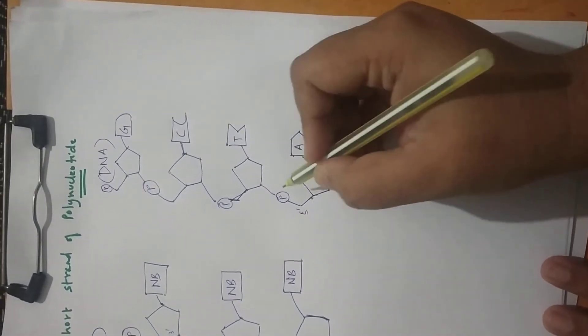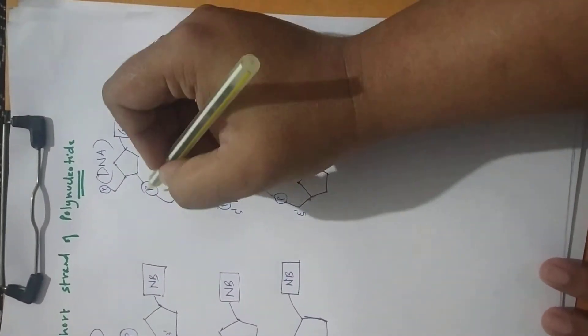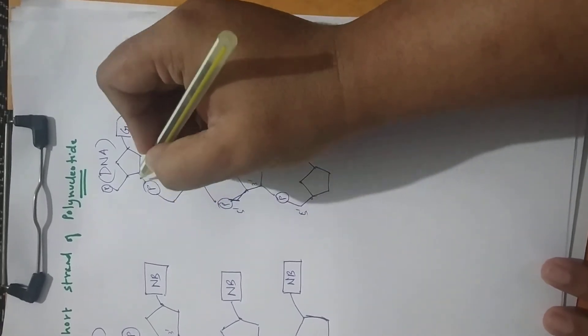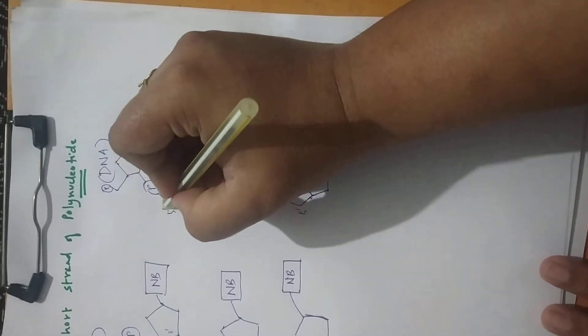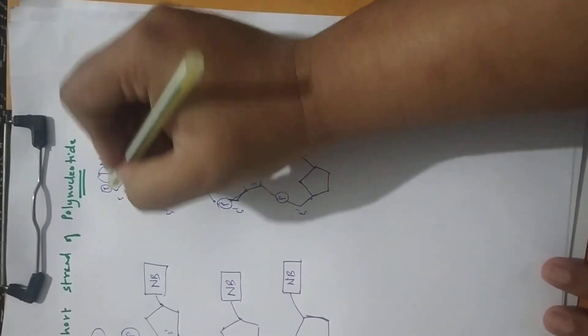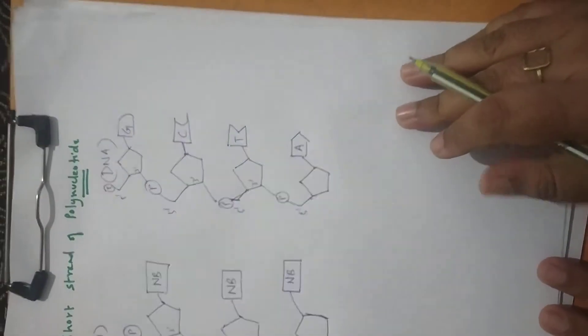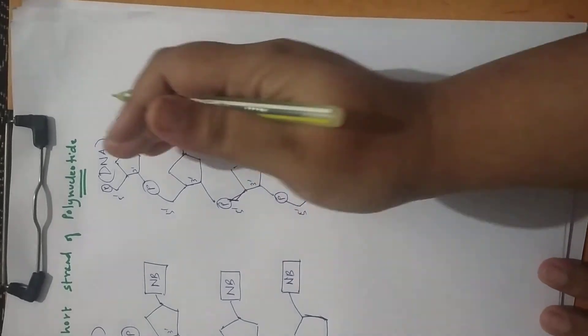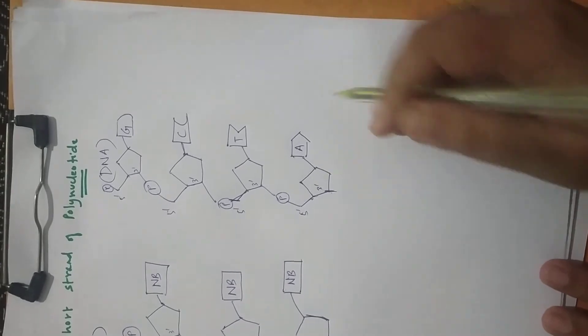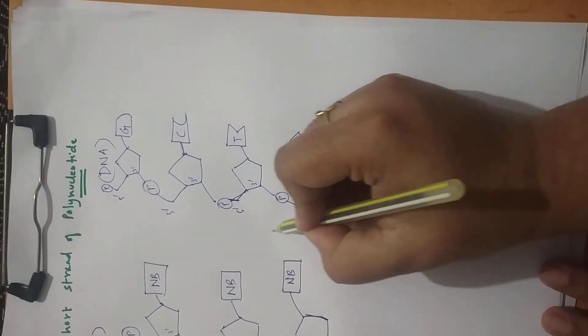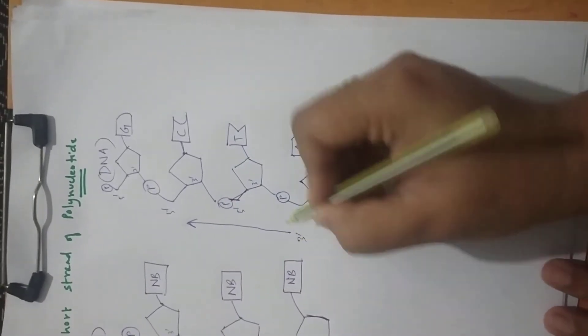Here you can see the 5' to 3', 5' to 3' bonding of phosphodiester bonds, phosphodiester linkages. This is again 5'. So you can see the strand. This strand starts from a 5' and then ends at a 3'. So this chain is proceeding from the 3' to 5' end.